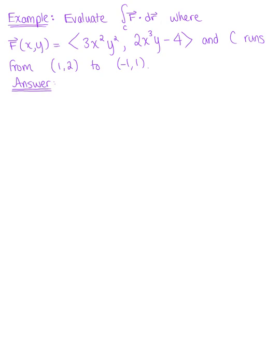Evaluate the vector line integral over the curve C, where the two-dimensional vector field is defined by the components 3x squared, y squared, and 2x cubed times y minus 4, and C runs from the point 1, 2 to negative 1, 1.